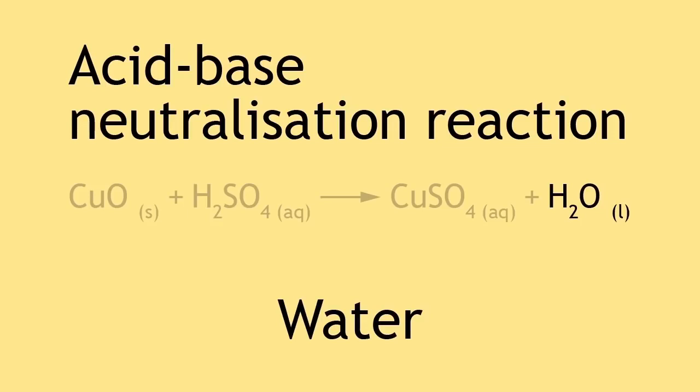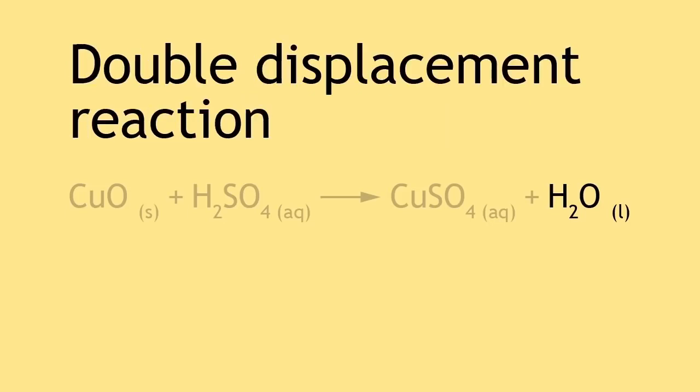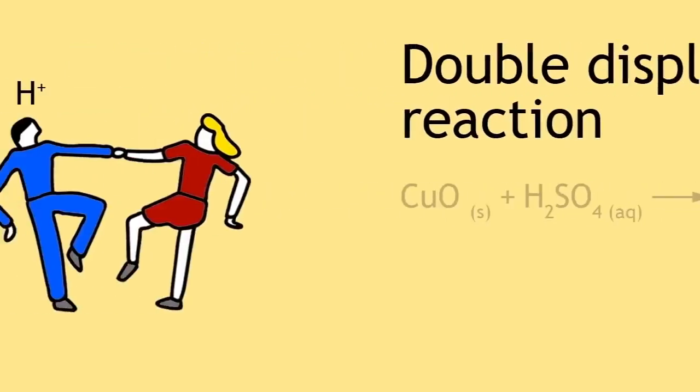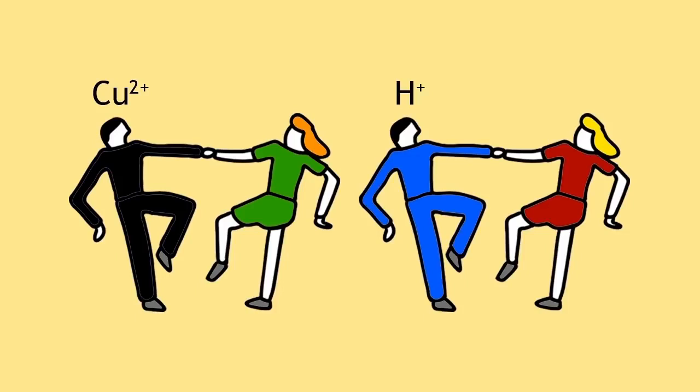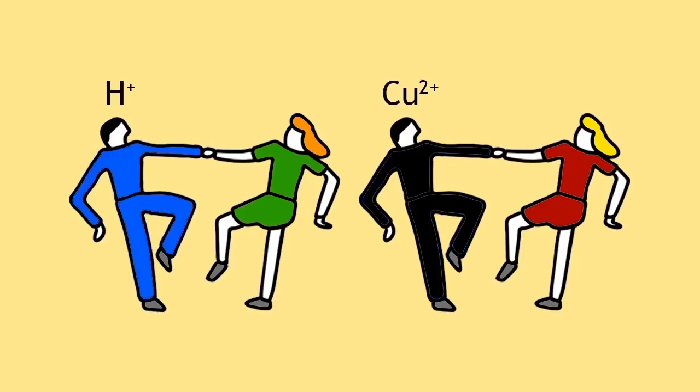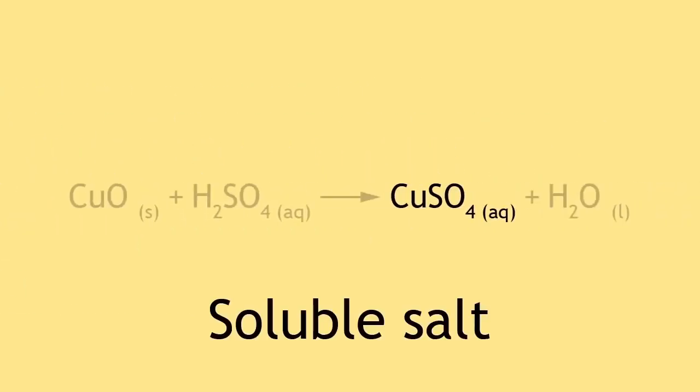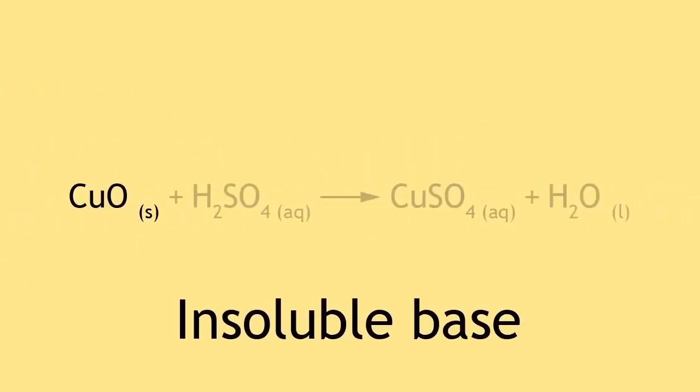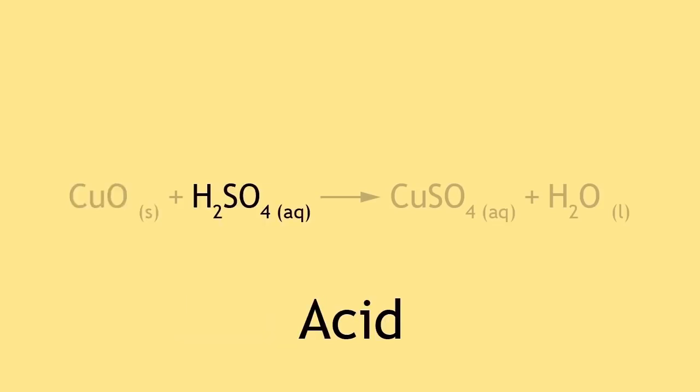An acid-base neutralization reaction is a type of double displacement reaction. The copper and hydrogen ions have switched, much like how certain dancing partners can switch. Therefore, a soluble salt can be made by reacting an insoluble base with an acid.